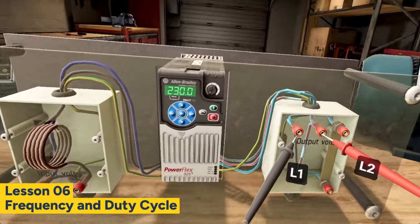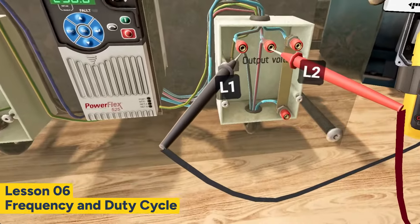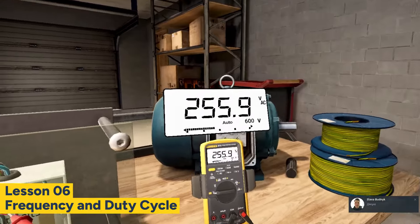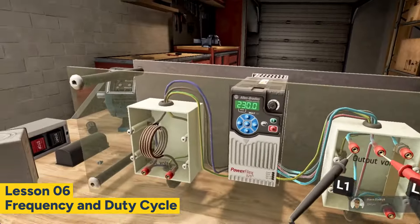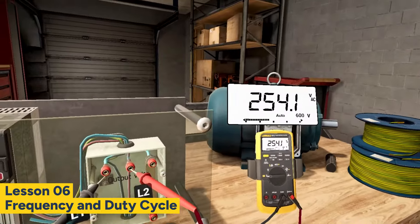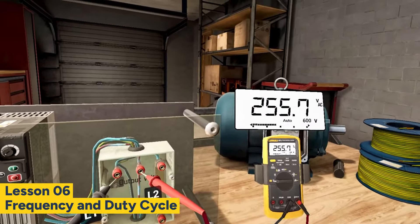Observe the reading on the display. As you can see, the output voltage we're reading is 255 volts instead of 230 we see on the VFD's display. That's because motor drives transform the standard sine wave into a PWM signal. A typical multimeter might not capture this accurately.